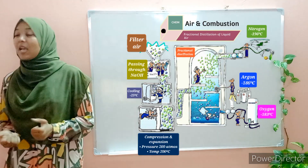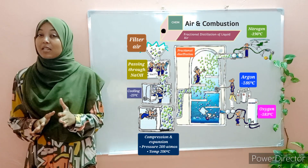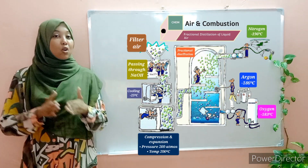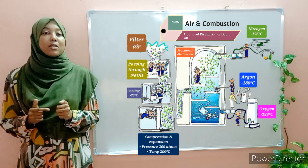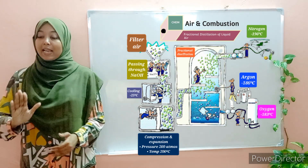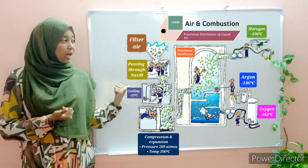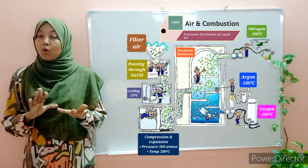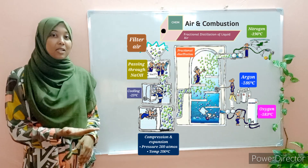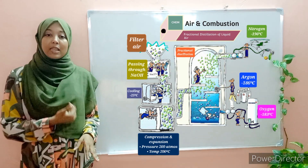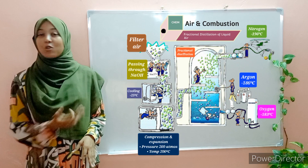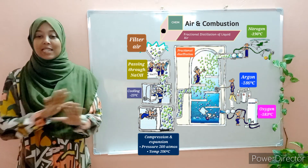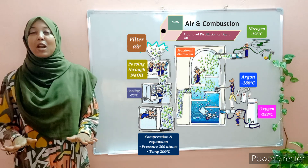Now finally we can proceed with the last step, which is fractional distillation. Fractional distillation involves separation of components of a mixture based on the differences in their boiling points. The air is passed into a fractionating column — nitrogen, having the lowest boiling point out of these three gases, distills off first, followed by argon, and lastly by oxygen. And there we have it — we are done with this process.